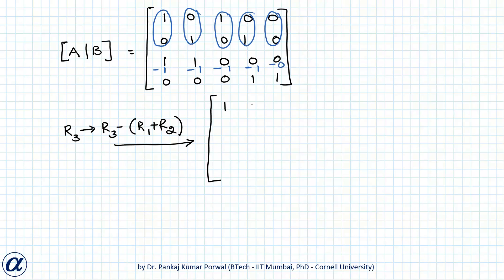That will give me 1 0 1 0 0, 0 1 0 1 0, 0 0 minus 1 minus 1 0, 0 0 0 1 1. Note that this is in row echelon form and this is 1, 2, 3, and 4 pivot elements. So rank of augmented matrix is also 4.